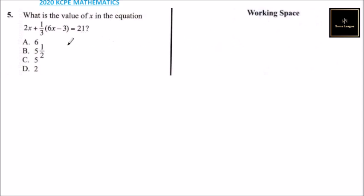So you can work it like that. First of all, let's open the bracket. This will give us 2x, then we have plus. We open the bracket. One-third multiplied by 6x, that will give us 2x.